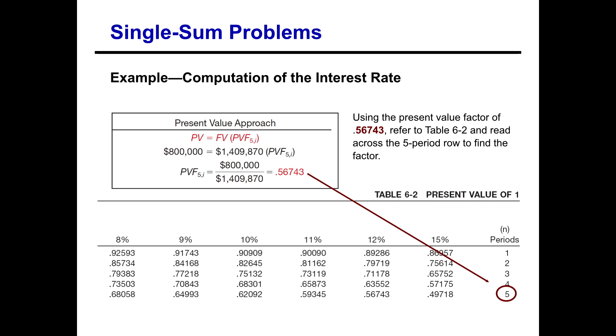And again, we know that's at five periods. So now we scan over across our paper there across our time value of money tables and we find that number again in the 12% column. So we are able to see that 12% is our rate to invest $800,000 today over the next five years. We will need to be achieving a 12% rate to be able to come up with a little over $1.4 million five years from now.